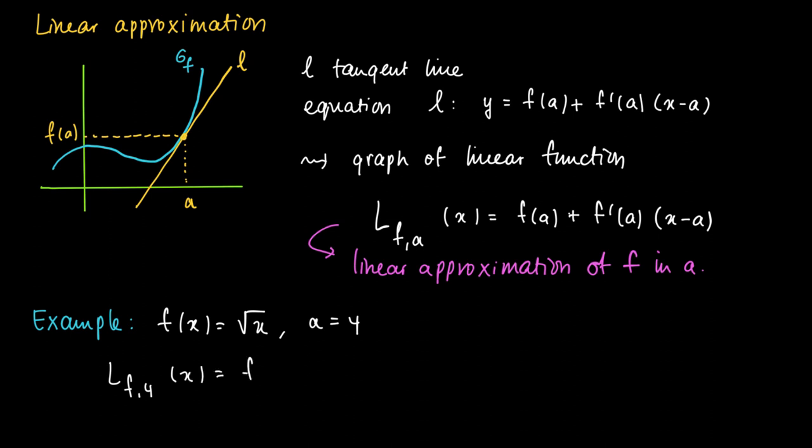Then the linear approximation of f in 4 equals f of 4 plus f prime of 4 times x minus 4. Now I just take a derivative of the square root of x. We find 1 over 2 times the square root of x. So we obtain the linear approximation is 2 plus 1 over 4 times x minus 4 equals 1 plus 1 over 4 times x.